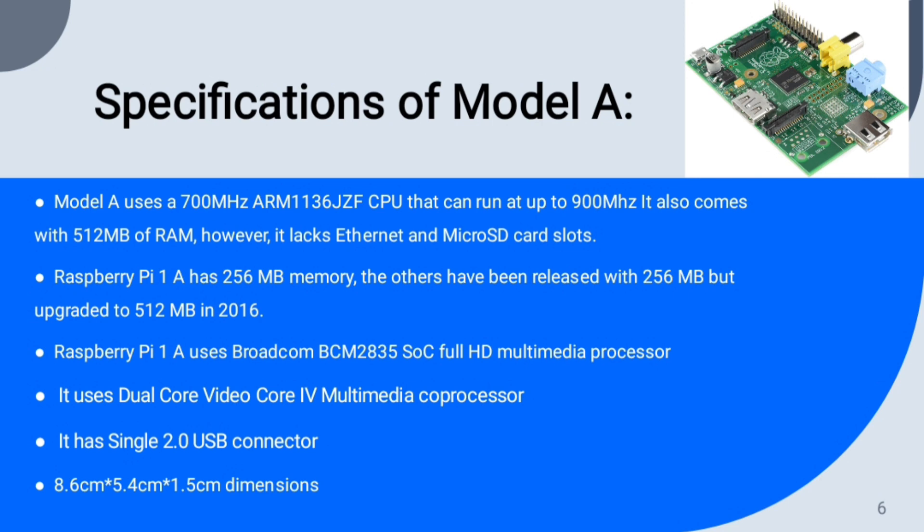The processor used by Model A is the BCM2835. The Raspberry Pi has a memory of 256 MB, but it was upgraded to 512 MB in 2016. It has a single USB 2.0 connector, and the dimensions of the Model A Raspberry Pi are 8.6 cm × 5.4 cm × 1.5 cm.